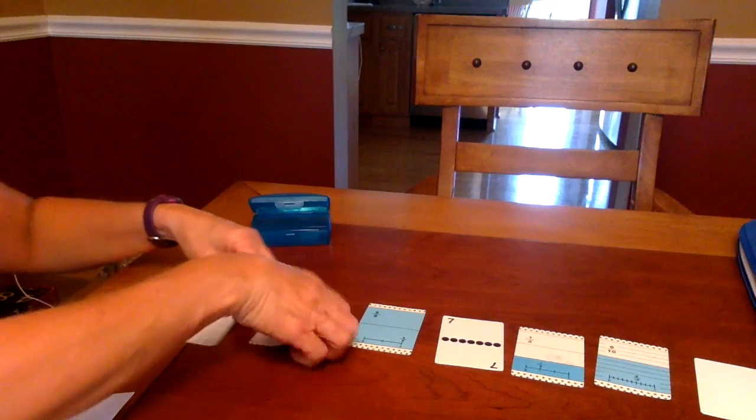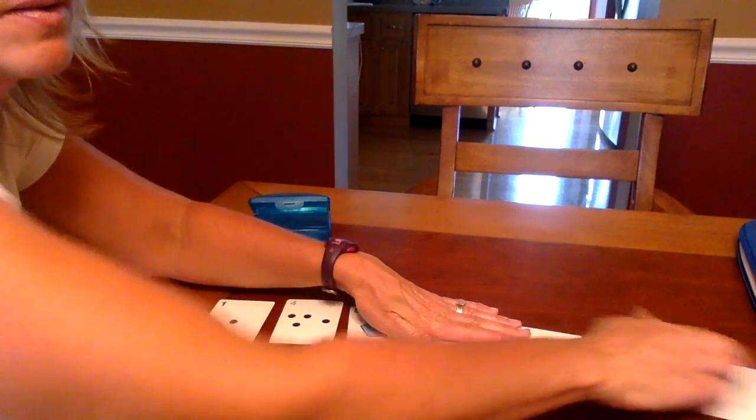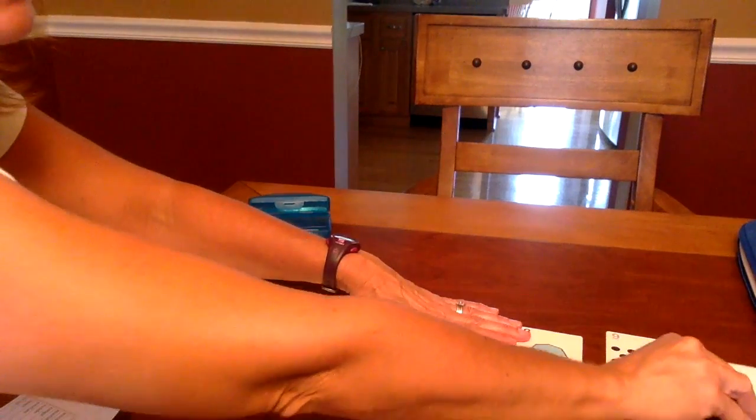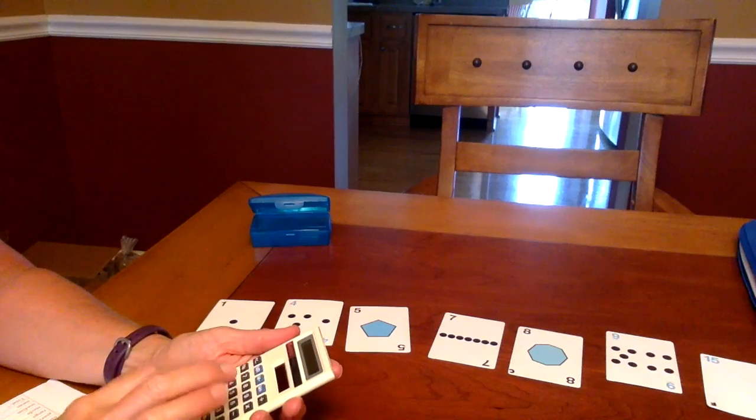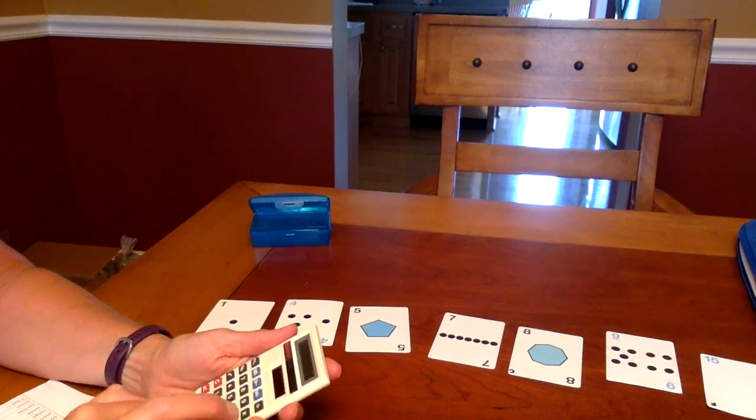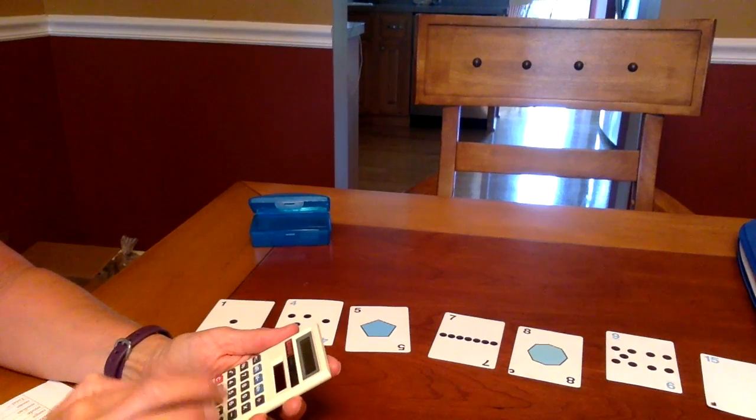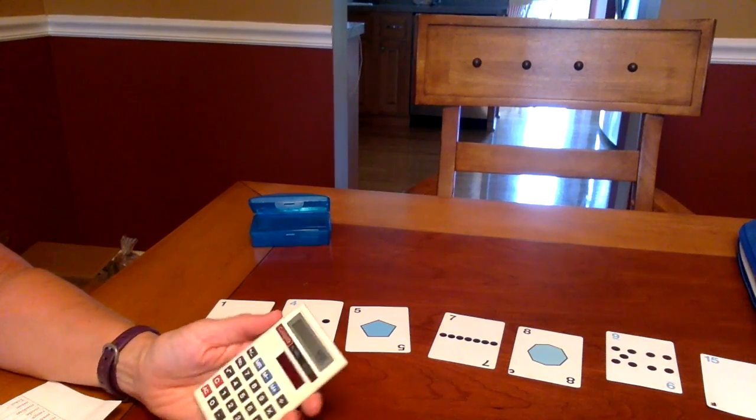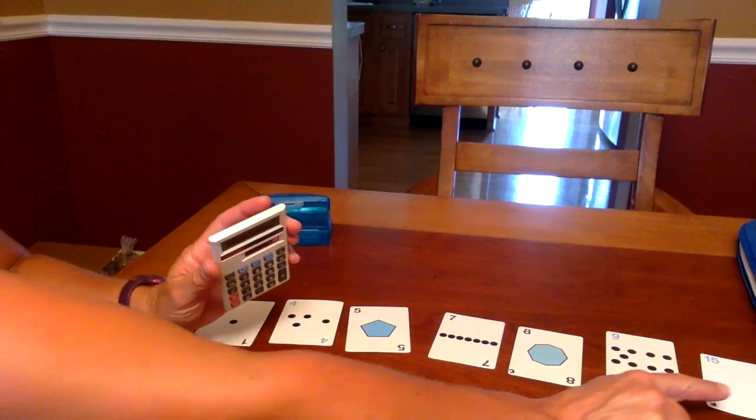So I'll turn my cards back over and I'm going to add up the sum of all of the cards. So 1 plus 4 plus 5 plus 7 plus 8 plus 9 plus 15 gives me a grand total of 49. Once I have the sum, I count how many cards I have: 1, 2, 3, 4, 5, 6, 7.